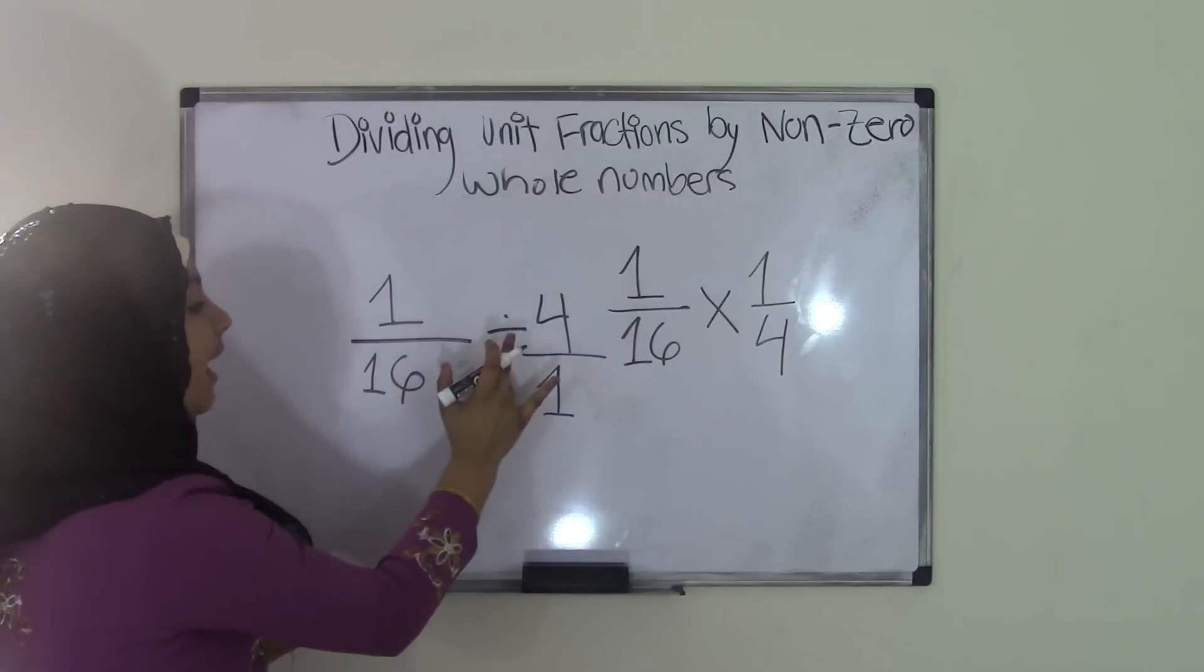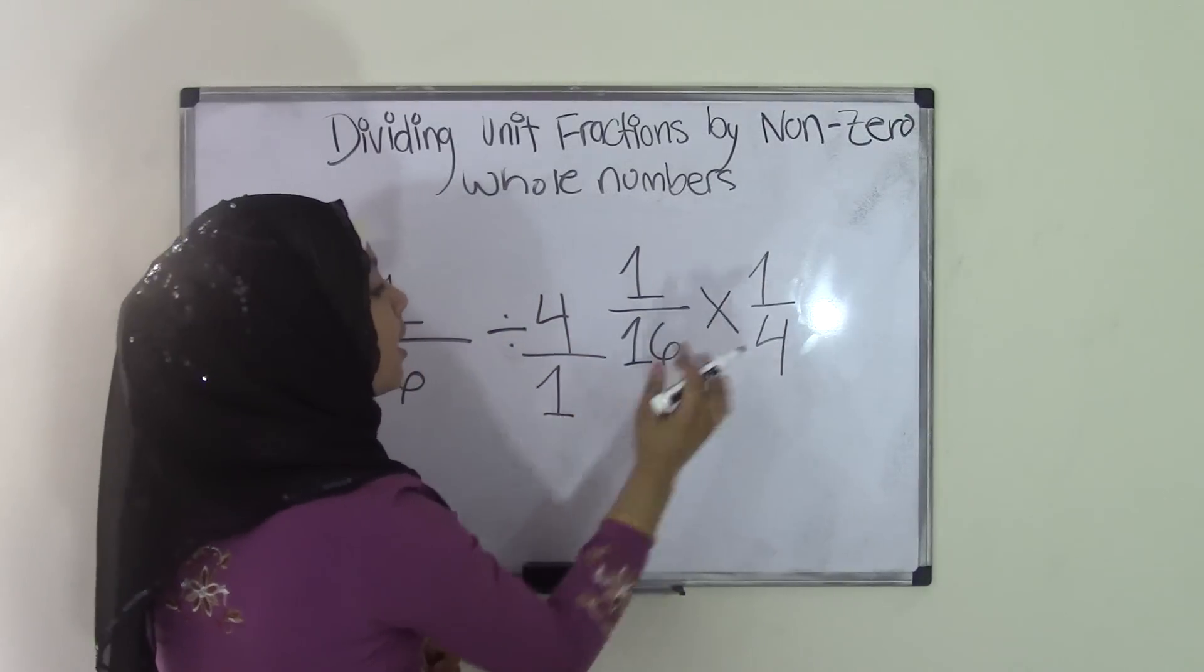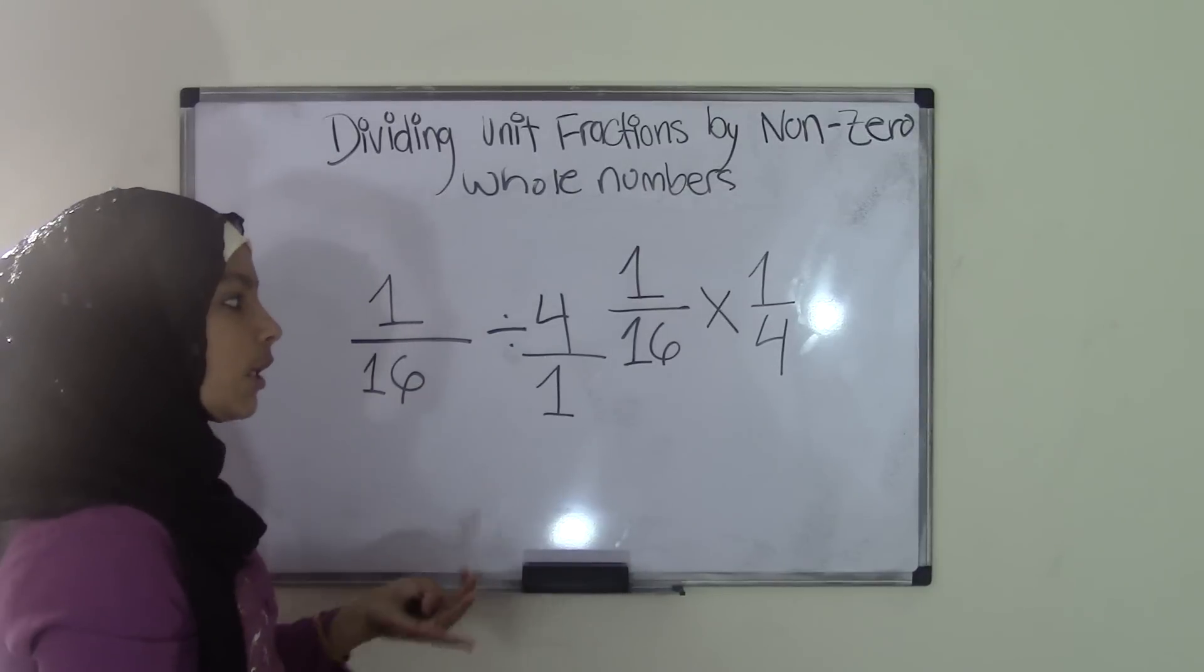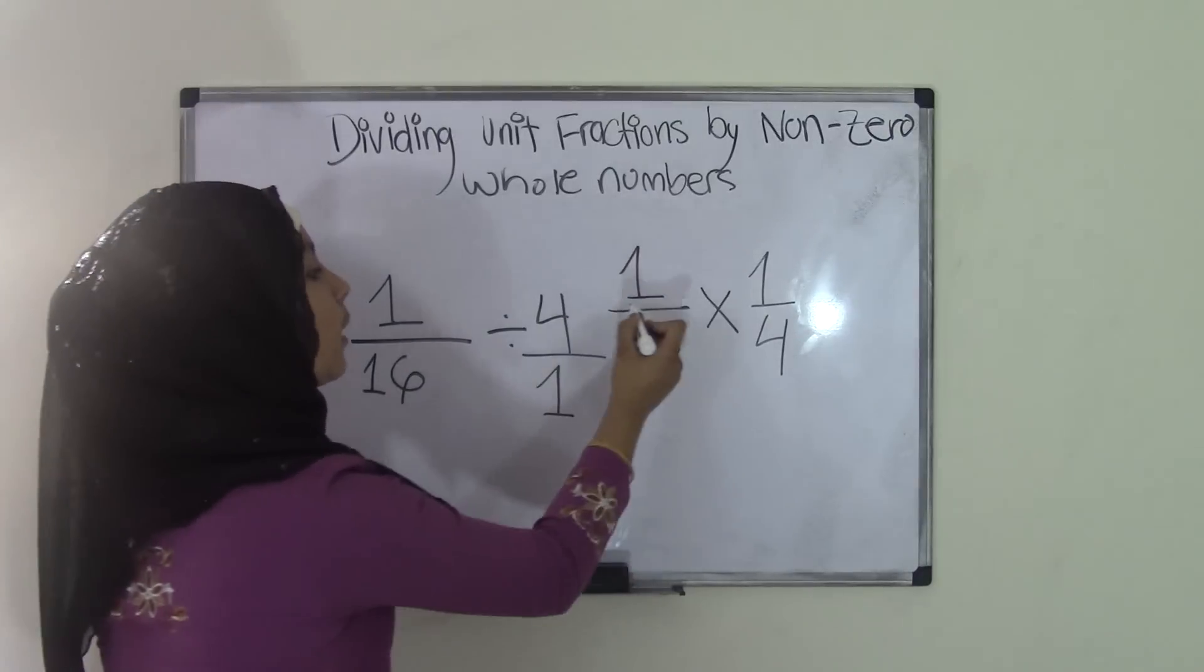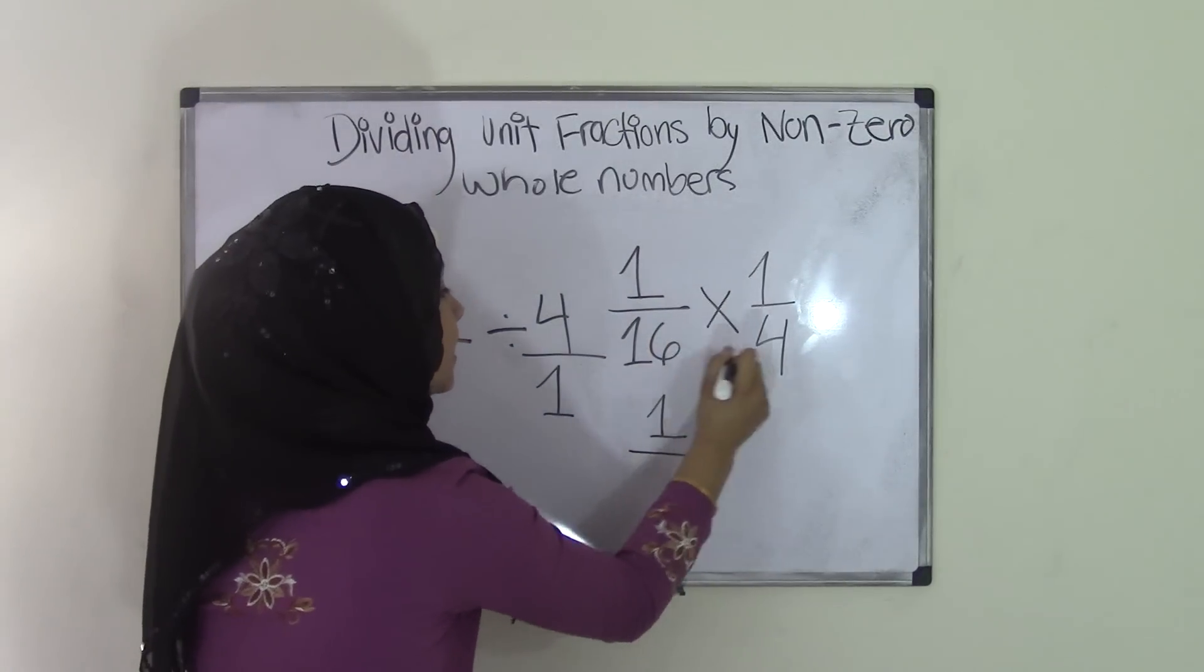So 1 over 16 divided by 4 over 1 becomes 1 over 16 times 1 over 4. So that's the reciprocal method. Now, all you have to do, now we all know that in multiplication of fractions, you just do direct multiplication, right? So we know that 1 times 1 is, of course, 1, and 16 times 4...